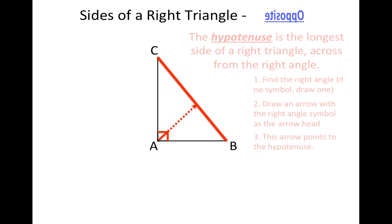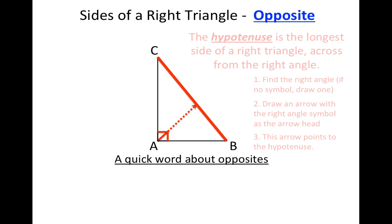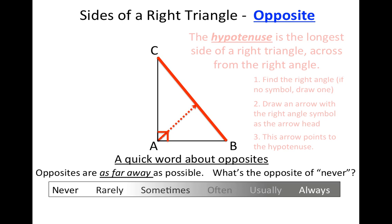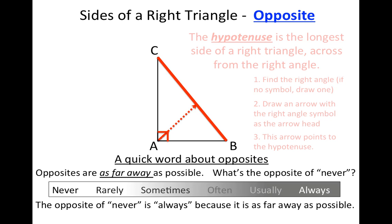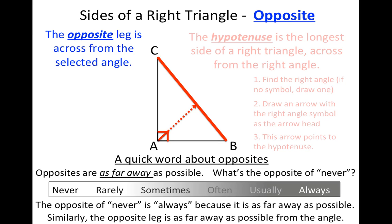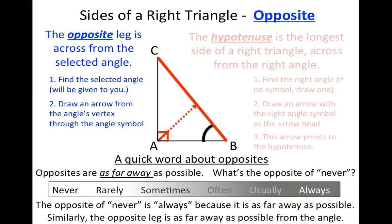My opposite side — before I do that, a quick word about opposites. Opposites are as far away as possible. What is the opposite of never? The opposite of never is always, because always is as far away from never as you can possibly get. It's not sometimes, it's not usually — it's always. Similarly, the opposite leg is as far away as possible from the angle. The opposite leg is across from the selected angle. If we're trying to find the opposite of angle B, draw an arrow through the vertex and through the angle symbol, and that points to the opposite side.